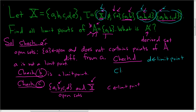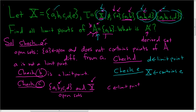The last one to check is e. Looking at all the open sets containing e, there's only one: capital X. Does it contain points of A different from little e? It does — it contains little a, because capital X contains everything. So little e is a limit point.